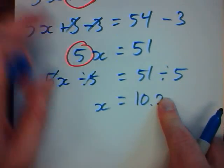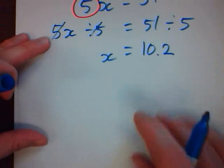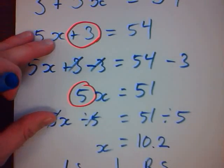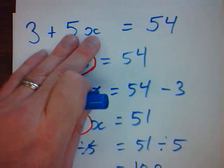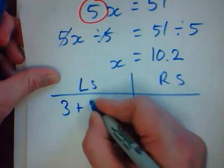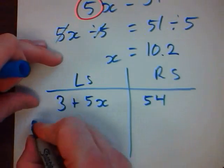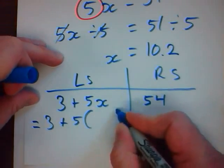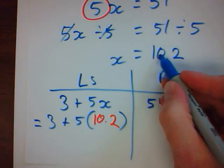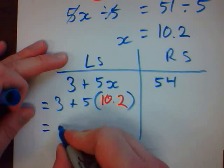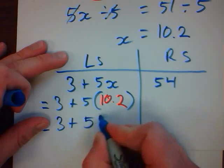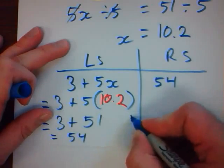It's 10.2. Question doesn't tell you anything about rounding. So don't round. Just in case I really made mistakes, I'm going back to the original, very first question that I made no changes to. I think that x is 10.2. So I will substitute and take my answer and replace the x with it. 5 times 10.2. 51. It works.